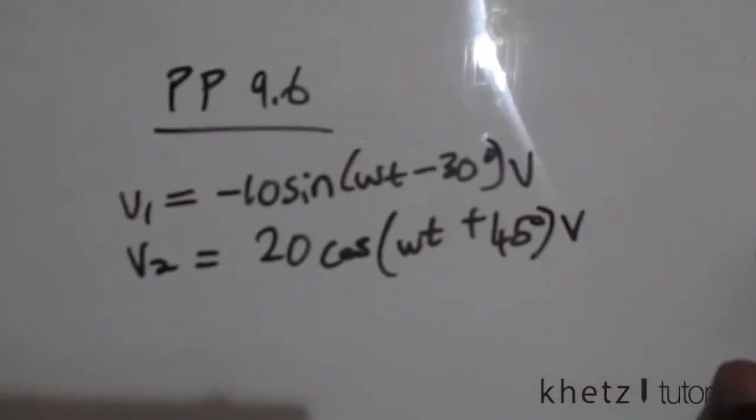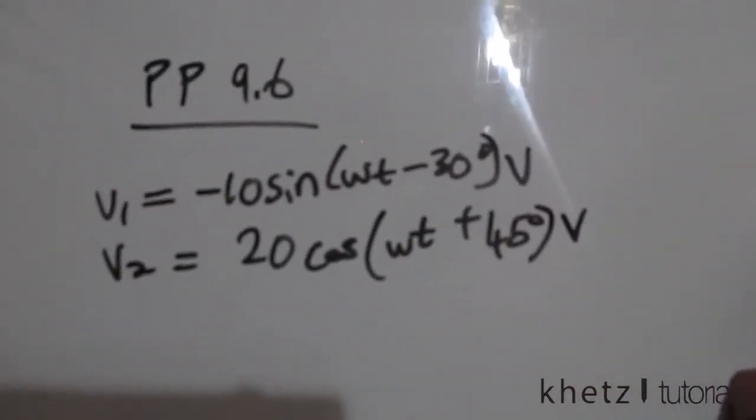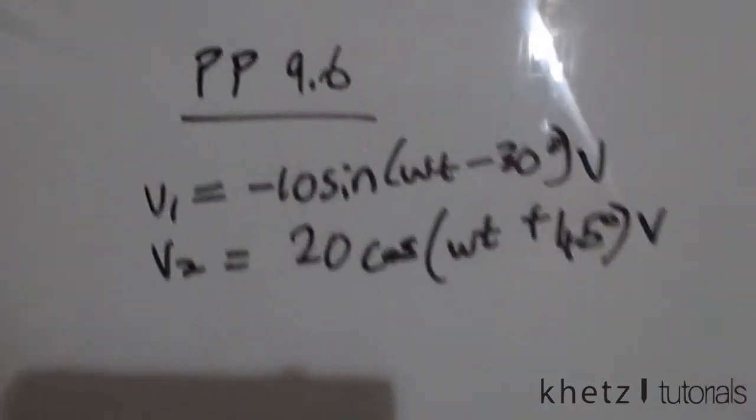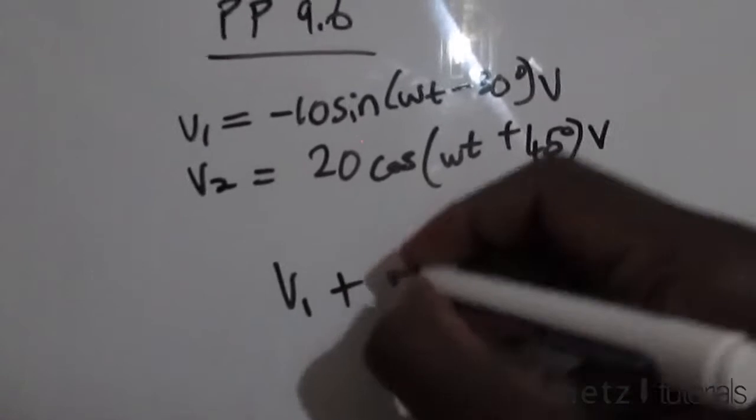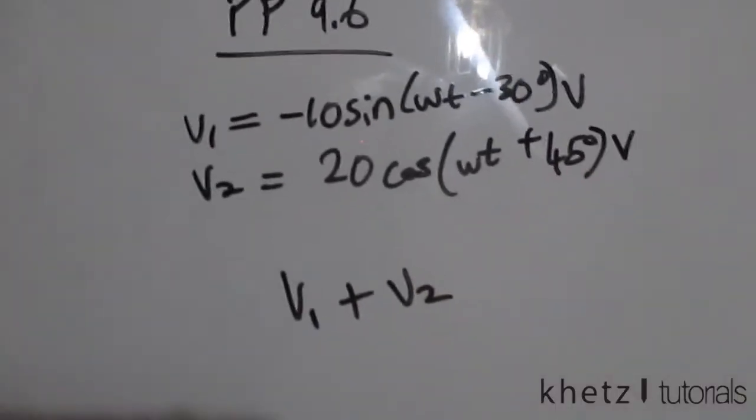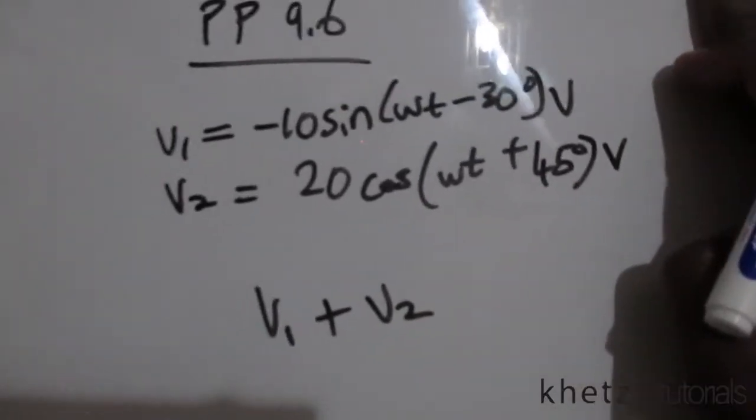Welcome to Khetz Tutorials. In this video, I'll be covering practice problem 9.6. We're given these two sinusoids and are asked to find v1 + v2.